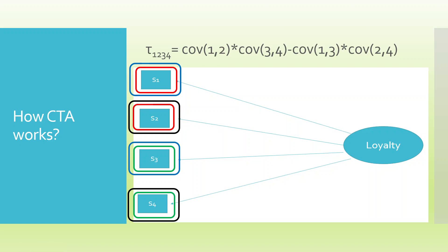Now let us understand the whole concept. Assume that 'loyalty' is a reflective construct. If it is reflective, the statements will be strongly correlated with each other. When they are strongly correlated and you calculate the covariance, the tetrad — covariance(1,2) × covariance(3,4) minus covariance(1,3) × covariance(2,4) — will be equal to or near zero. For a formative scale, the correlation will be very low and the tetrad value will be higher than zero, which is a clear indication that it is a formative construct. The name itself suggests: tetrad means four.